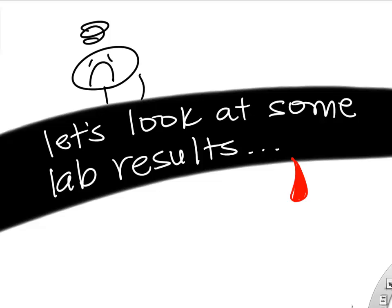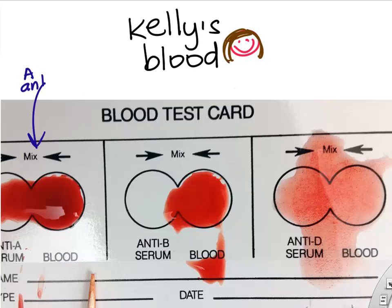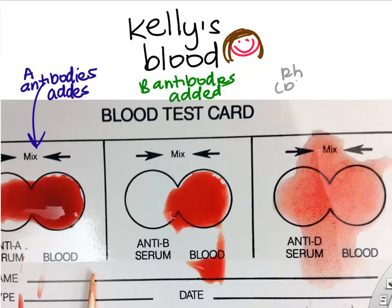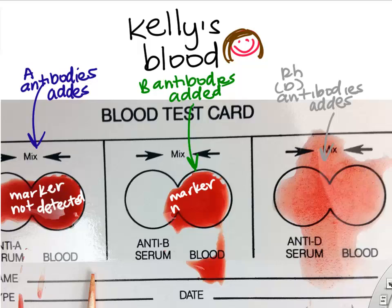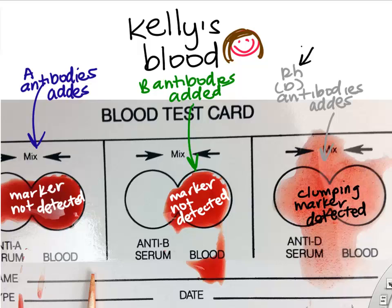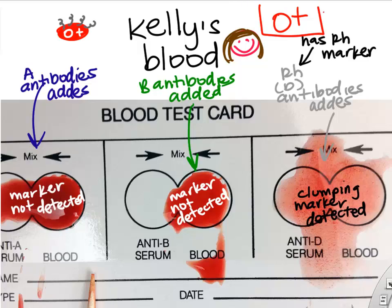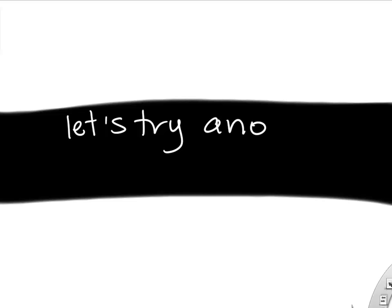Let's look at some student examples. For Kelly's blood, we have three drops. We add A antibodies to the first drop, B antibodies to the second drop, and RH antibodies to the third drop. The A antibodies do not detect any markers, the B antibodies do not detect markers, but the RH antibodies do detect something — we can see that by clumping. This suggests that Kelly's red blood cells have the RH marker. She lacks the A and B markers, so we call her blood type O positive.